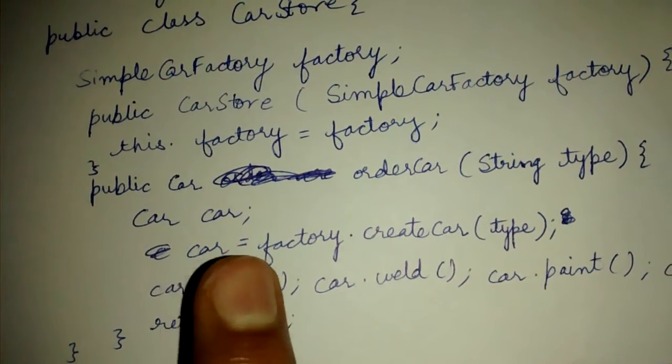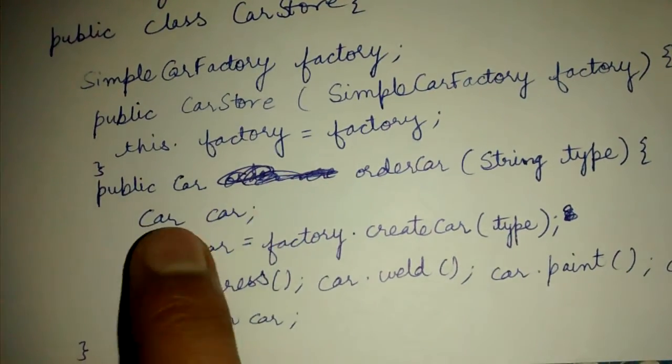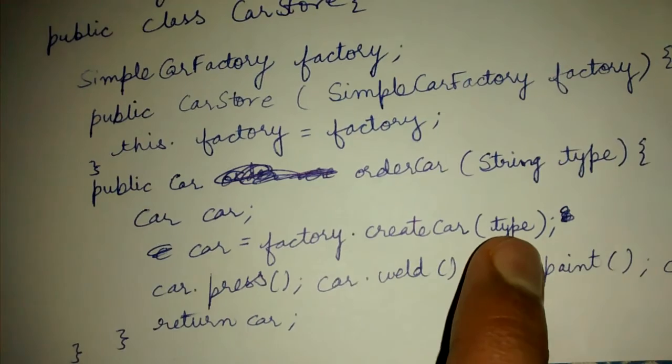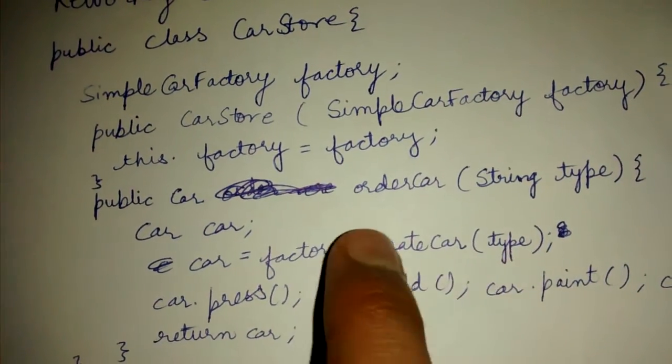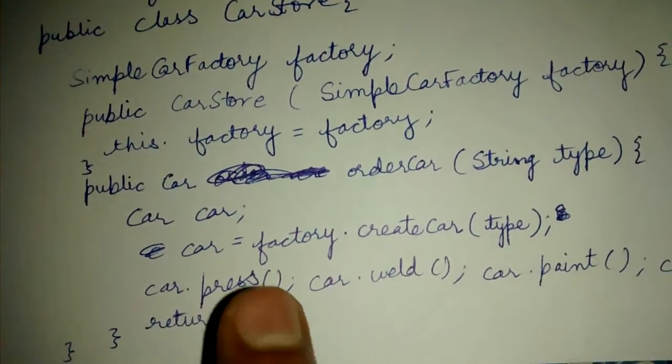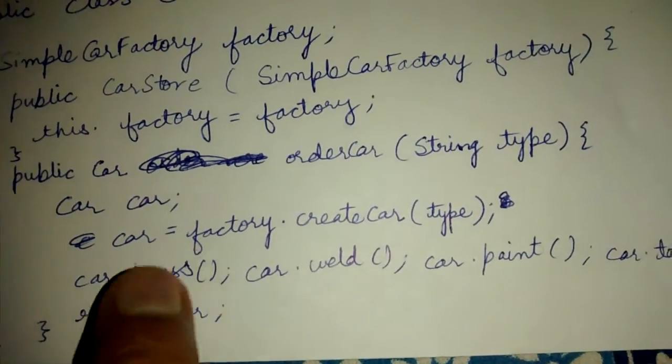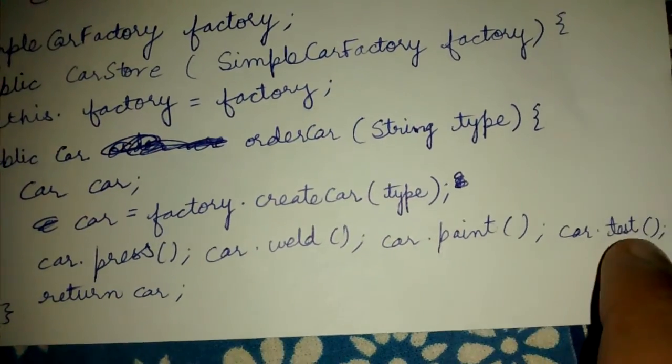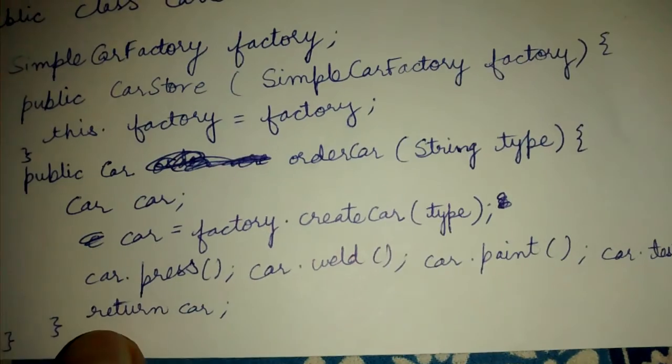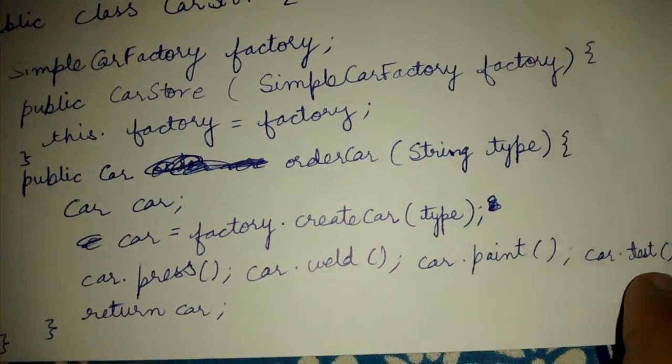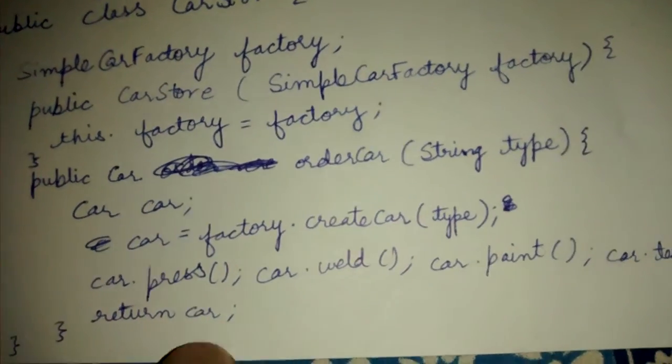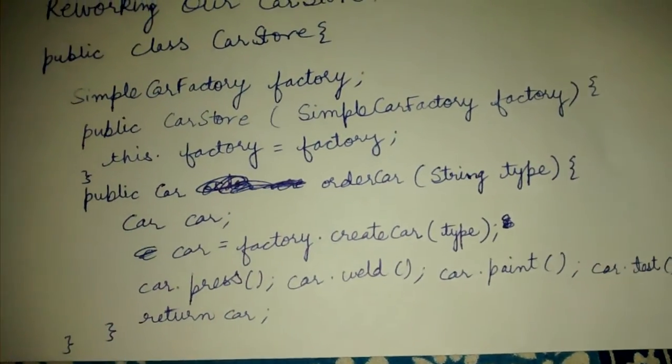Basically, as we have seen in Liskov Substitution Principle, this car reference is sufficient to point to any of its child. One of the child will be returned basically, and it can be pointed to by a car reference. After we got the car, we perform this press, weld, paint, and test activities on it. Finally, we are done with our final car product and we return it to the client.